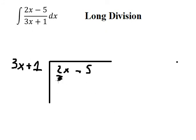Because this term is 2x and this term is 3x, to create 2x here we need to use 2/3. 2/3 multiplied by 3x gives us 2x, and 2/3 multiplied by 1 gives us this number.